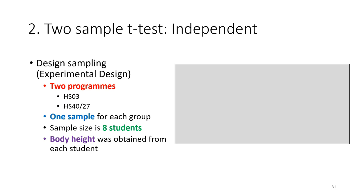Starting from now, for all your tutorials you have to describe your experiment design. As discussed in the first lecture, this course covers biometry and experiment design — you are not only going to learn statistics, you are also going to learn experiment design. When you submit your assignment, after you have your research question, you have to explain your experiment design.